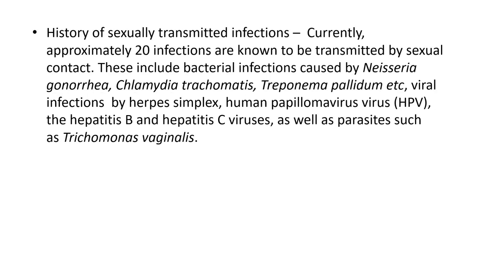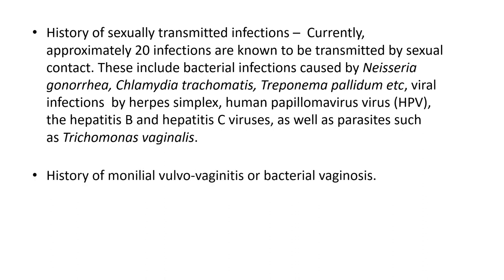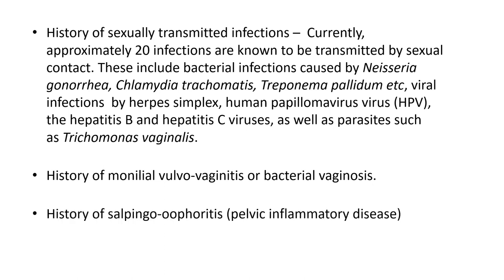History of sexually transmitted infections: approximately 20 infections are known to be transmitted by sexual contact. These include bacterial infections caused by Neisseria gonorrhoeae, Chlamydia trachomatis, Treponema pallidum; viral infections by herpes simplex, human papillomavirus, hepatitis B and C; and parasites such as Trichomonas vaginalis. Ask about any history of monilial vulvovaginitis, bacterial vaginosis, and the treatment taken, as well as history of salpingitis or pelvic inflammatory disease.